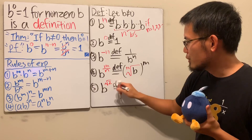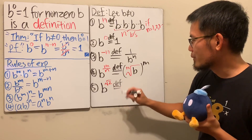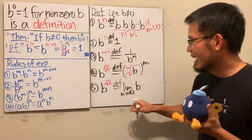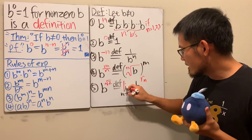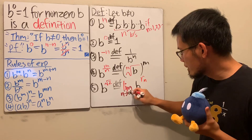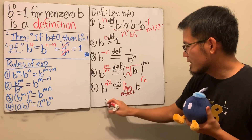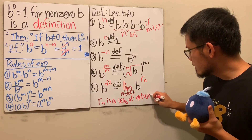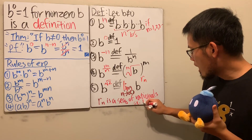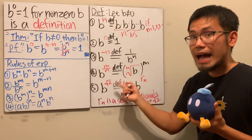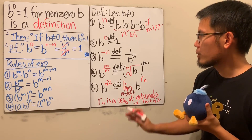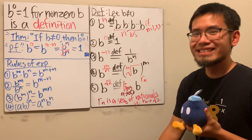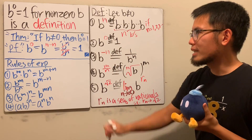The definition of b to an irrational power is the limit as n goes to infinity of b to the r_n, where r_n is a sequence of rational numbers that converges to that irrational number — in this case, converging to the square root of two. So those are all the definitions of exponents. When you see b to the zero power, we have not done any proof, because we have not yet talked about what it means — we simply define it to be one.